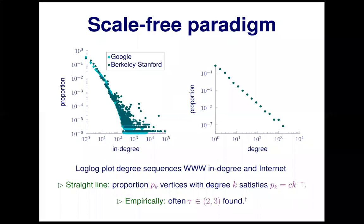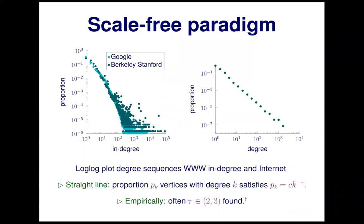There are many claims that the empirical values of the power law exponent should be between two and three, though there's a lot of discussion about whether this is the case. If the power law exponent is between two and three, it actually means that the variance of the degree distribution is infinite. Processes with infinite variance are rather peculiar, and we'll see that in more detail later on.